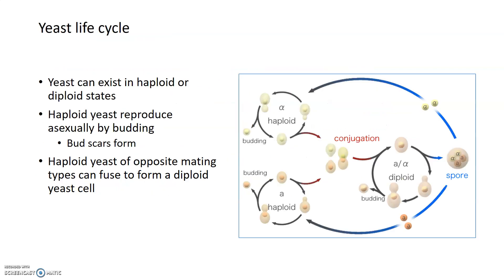To talk about yeast genetics and lifespan, we first need to discuss the yeast life cycle. Yeast can exist in two different chromosomal states. They can exist as haploid, with one set of chromosomes. Haploid yeast generally reproduce by budding — the formation of a small bud that grows and becomes genetically identical to its parent cell. Budding is akin to mitosis in higher organisms.